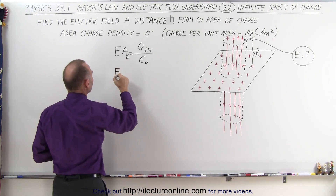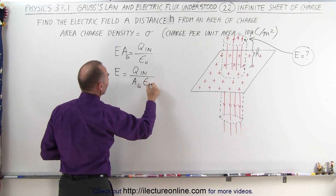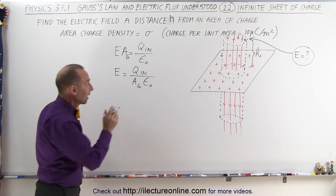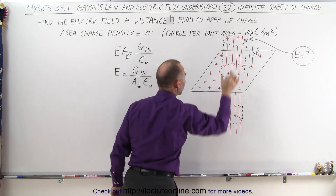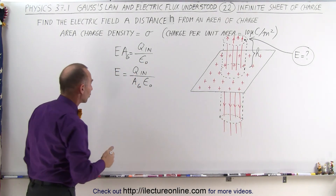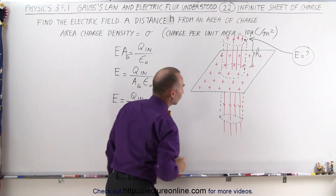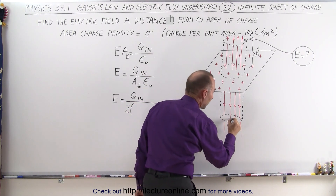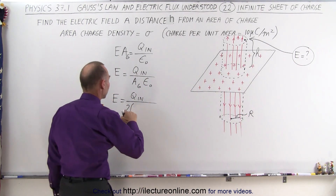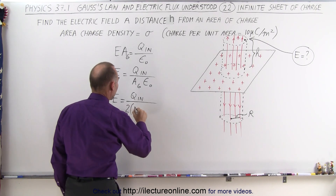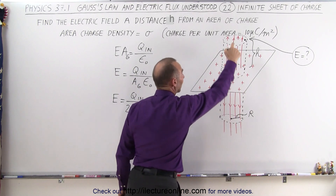Rearranging, the magnitude of the electric field equals the charge inside divided by the area of the Gaussian surface times epsilon sub naught. The total area is twice the area of one circle due to symmetry — one circle at the top and one at the bottom. So E equals Q_inside divided by two times pi r squared times epsilon sub naught.